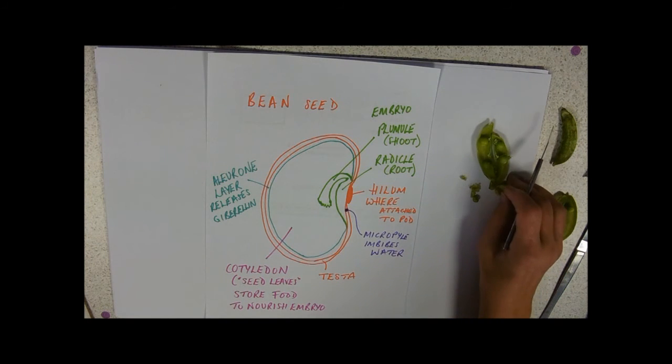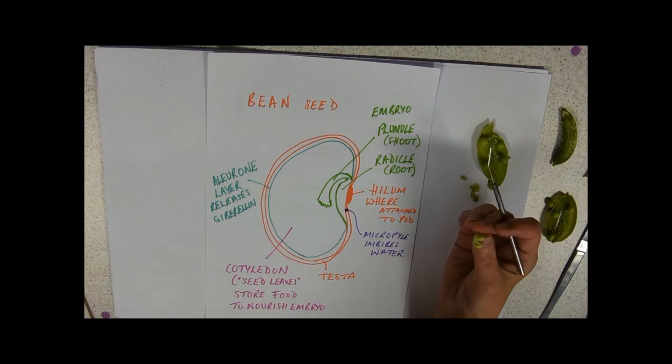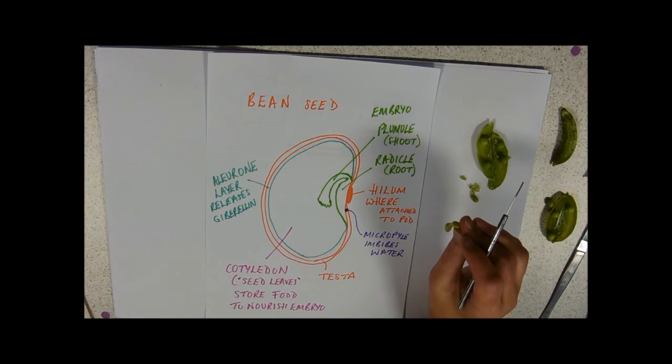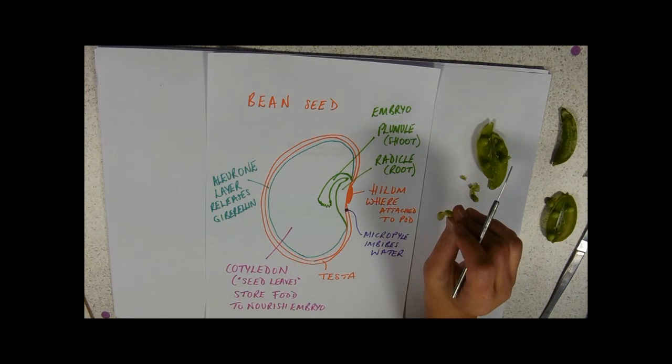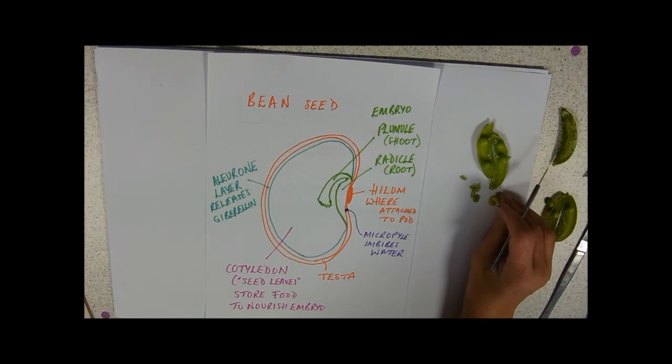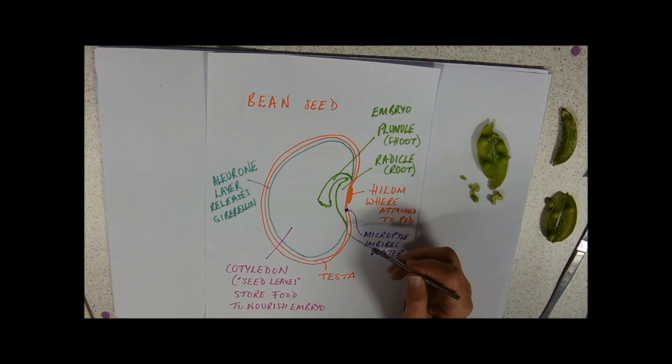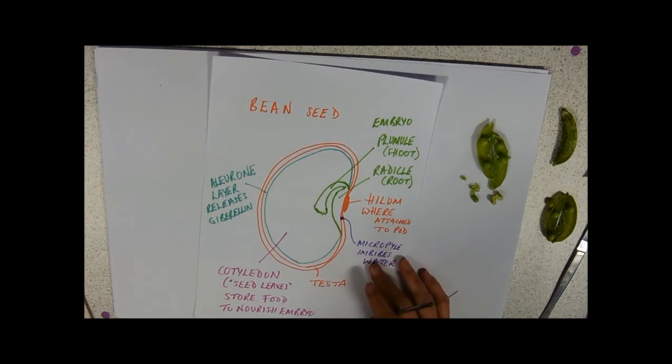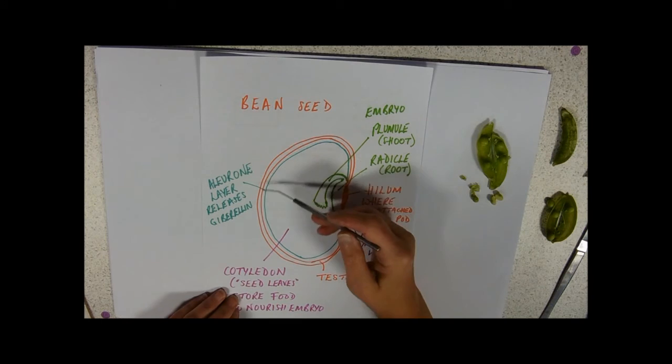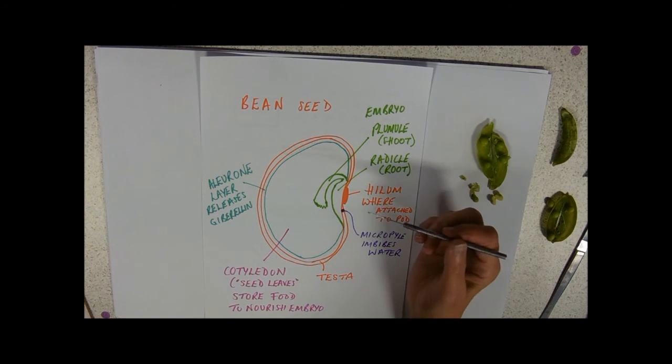As we could see from our little pea seed, the radical is going to be the first thing out. It's going to grow down into the soil and carry on taking in water and mineral ions. We've got the testa on the outside, a protective function derived from the integuments of the ovule.